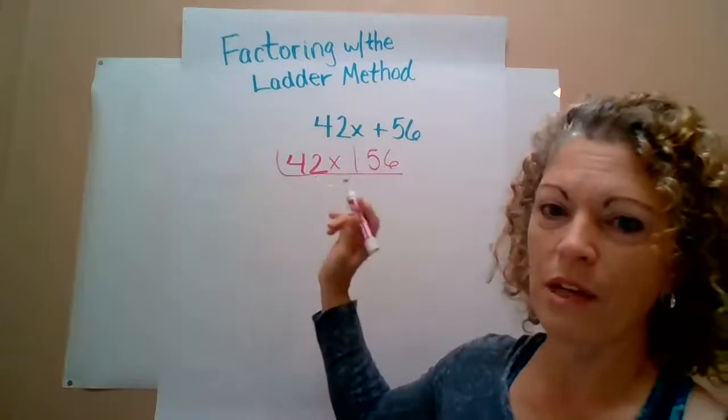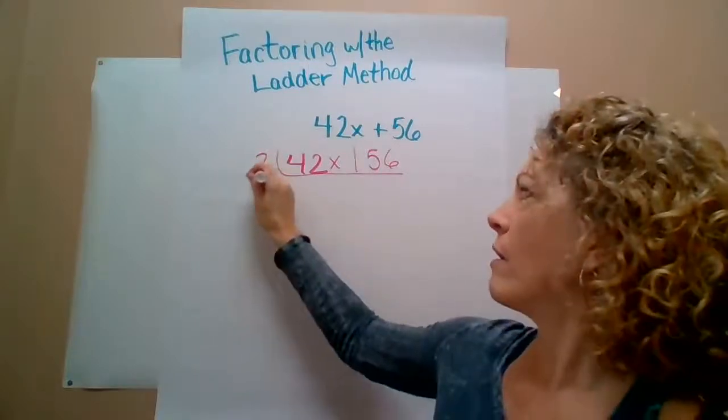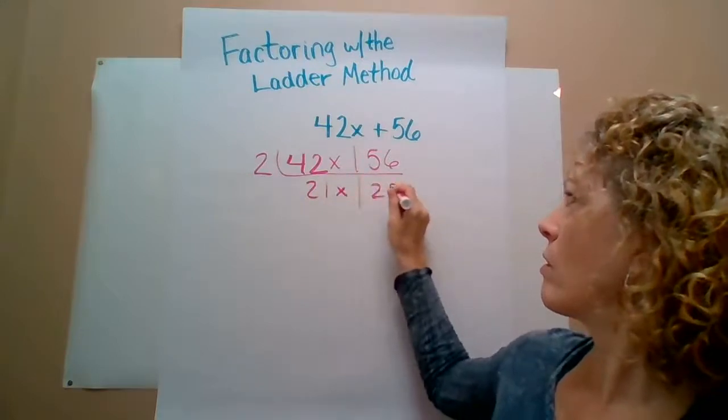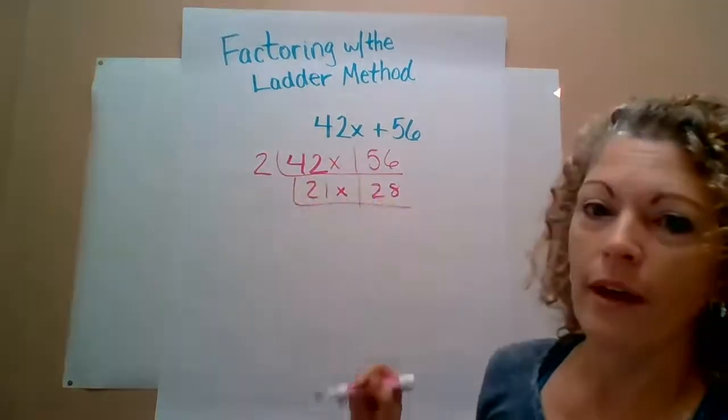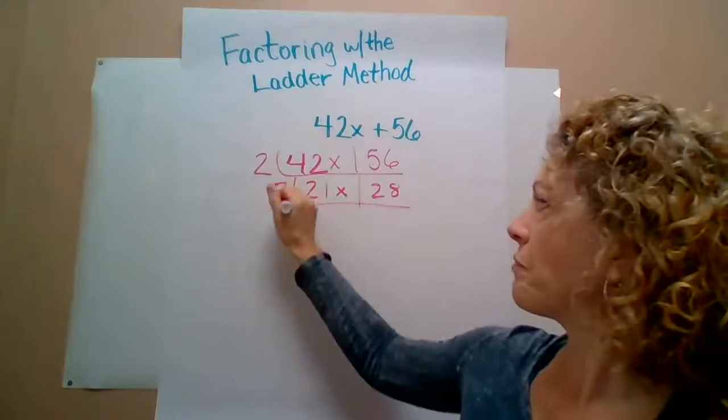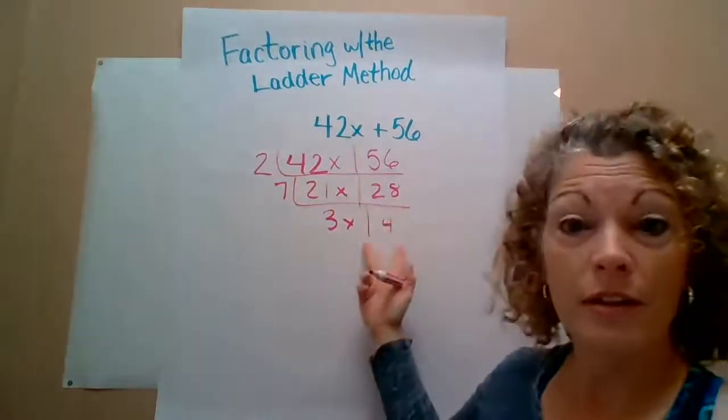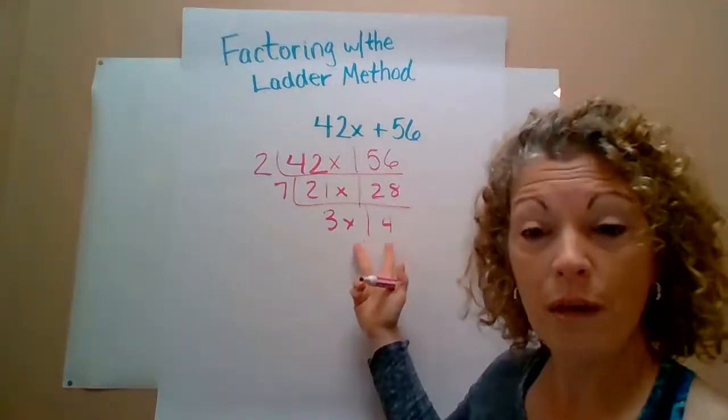So again, I do with the prime numbers, have the prime number out first. And then they can take out a seven. And this has no more common factors, so they stop there.